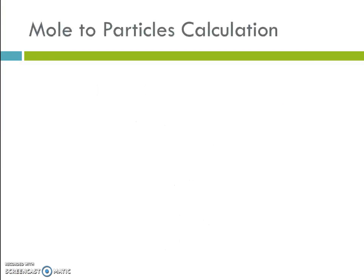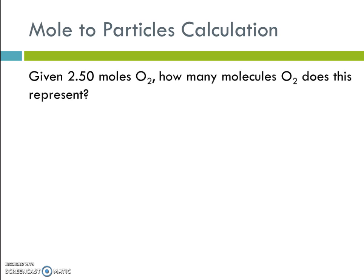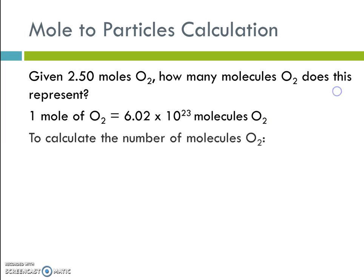So the first calculation will be going from moles to particles. Given 2.50 moles of oxygen, how many molecules does this represent? Our conversion fact, 1 mole of oxygen has 6.02 times 10 to the 23rd molecules of oxygen. So, to calculate the number of moles of oxygen,